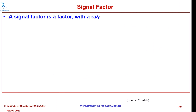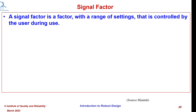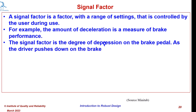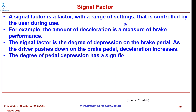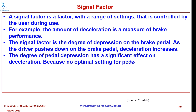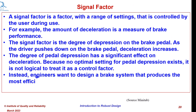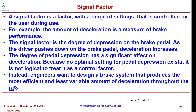A signal factor is a factor with a range of settings that is controlled by the user during use. For example, the amount of deceleration is a measure of brake performance. The signal factor is the degree of depression on the brake pedal. As the driver pushes down on the brake pedal, deceleration increases. The degree of pedal depression has a significant effect on the deceleration and time to stop the vehicle. Because no optimal setting for the pedal depression exists, it is not logical to treat this as a control factor. Instead, engineers would like to design a brake system that produces the most efficient and least variable amount of deceleration throughout the range of brake pedal depression.